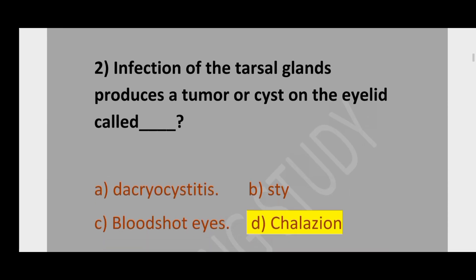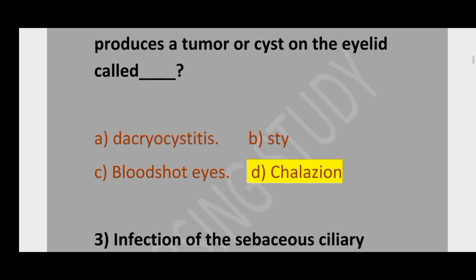Question number 2. Infection of the tarsal glands produces a tumor or cyst on the eyelid called: option A, chalazion; option B, stye; option C, bloodshot eye; option D, callous. The correct option is already selected.